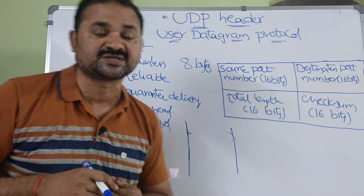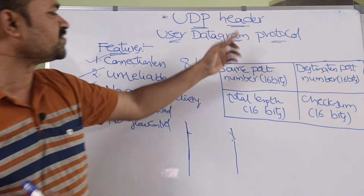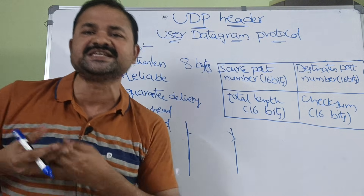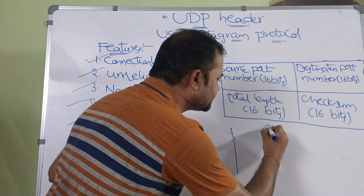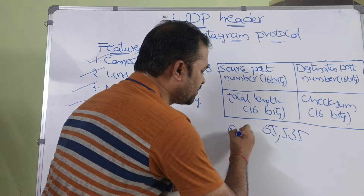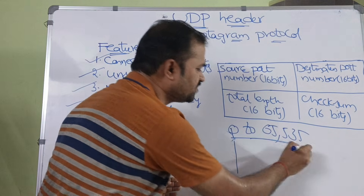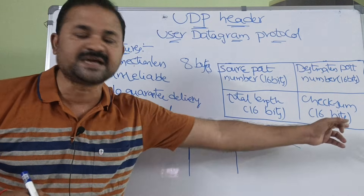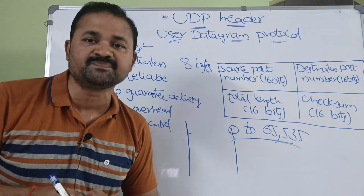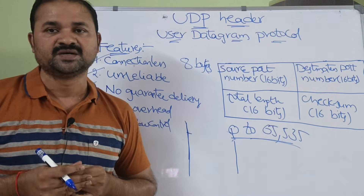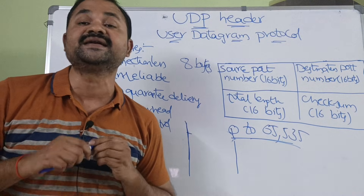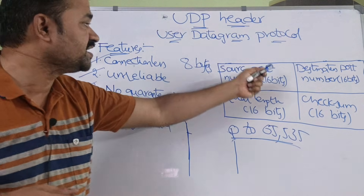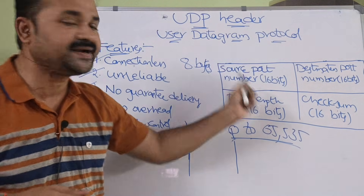The total length of the UDP header is 16 bits. So, totally we can have 2 to the power of 16 numbers, which means 65,535. So, it can send data ranging from 0 to 65,535. Next, checksum, whose capacity is 16 bits. Checksum is mainly useful for error detection, so here also we will use checksum for error detection purposes. This covers the features of UDP as well as the header format of the UDP.